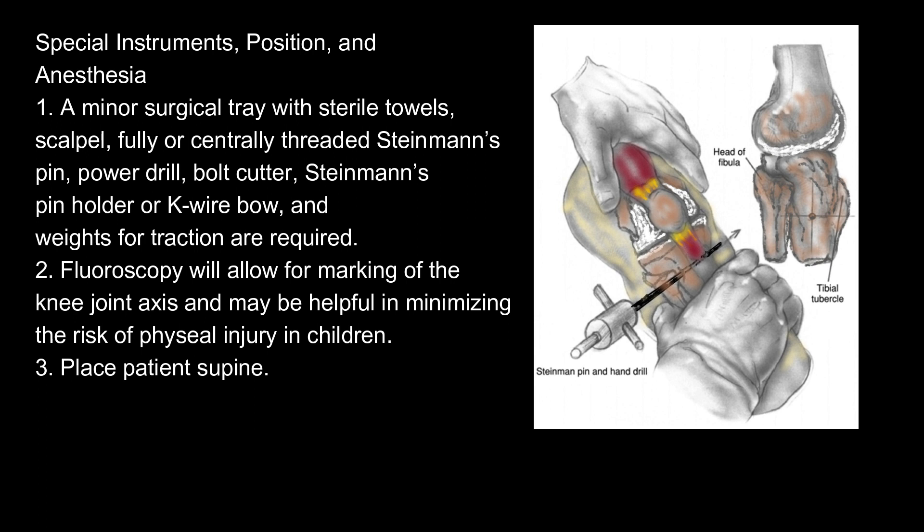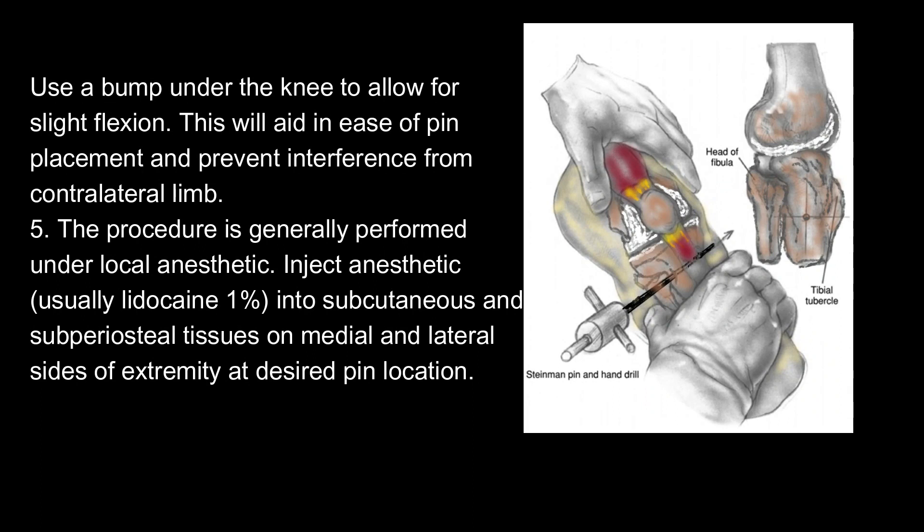Special instruments, position, and anesthesia: 1. A minor surgical tray with sterile towels, scalpel, fully or centrally threaded Steinmann pin, power drill, bolt cutter, Steinmann pin holder or K-wire bow, and weights for traction are required. 2. Fluoroscopy allows marking of the knee joint axis and may help minimize physeal injury in children. 3. Place a bump under the knee to allow for slight flexion, which aids pin placement and prevents interference from the contralateral limb. The procedure is generally performed under local anesthetic — inject lidocaine 1% into subcutaneous and subperiosteal tissues on medial and lateral sides at the desired pin location.